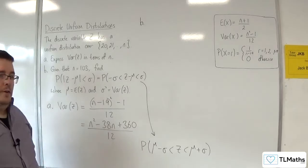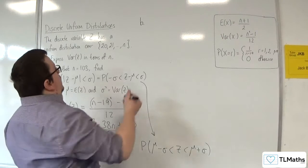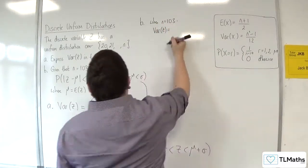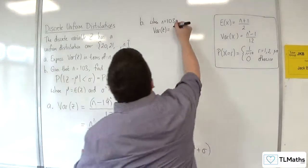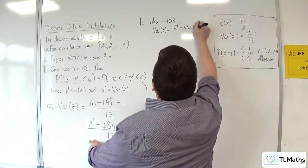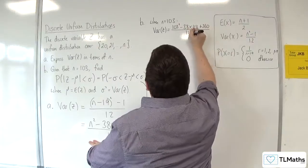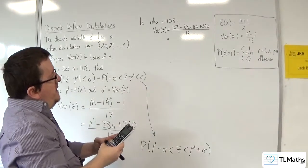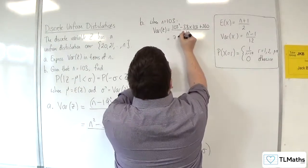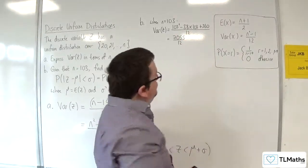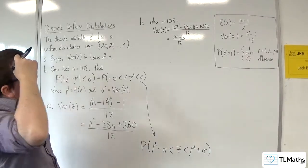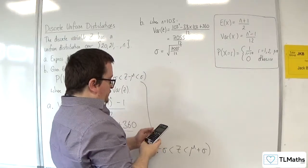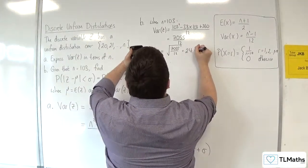I need to find μ and σ. What I'll do first is find σ because I've got variance of z here. When n is 103, the variance of z is going to be equal to 103² - 38 lots of 103 plus 360 divided by 12. I get 7055 over 12. That's my variance. I need the square root of that for σ: square root of 7055 over 12, and we get 24.24.